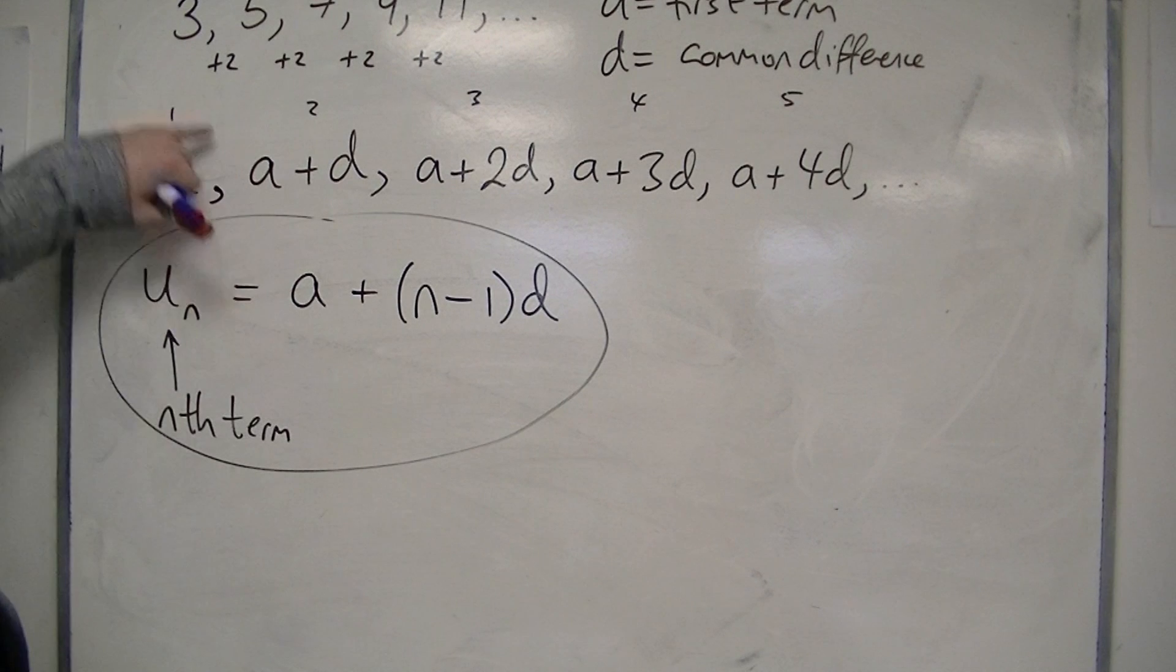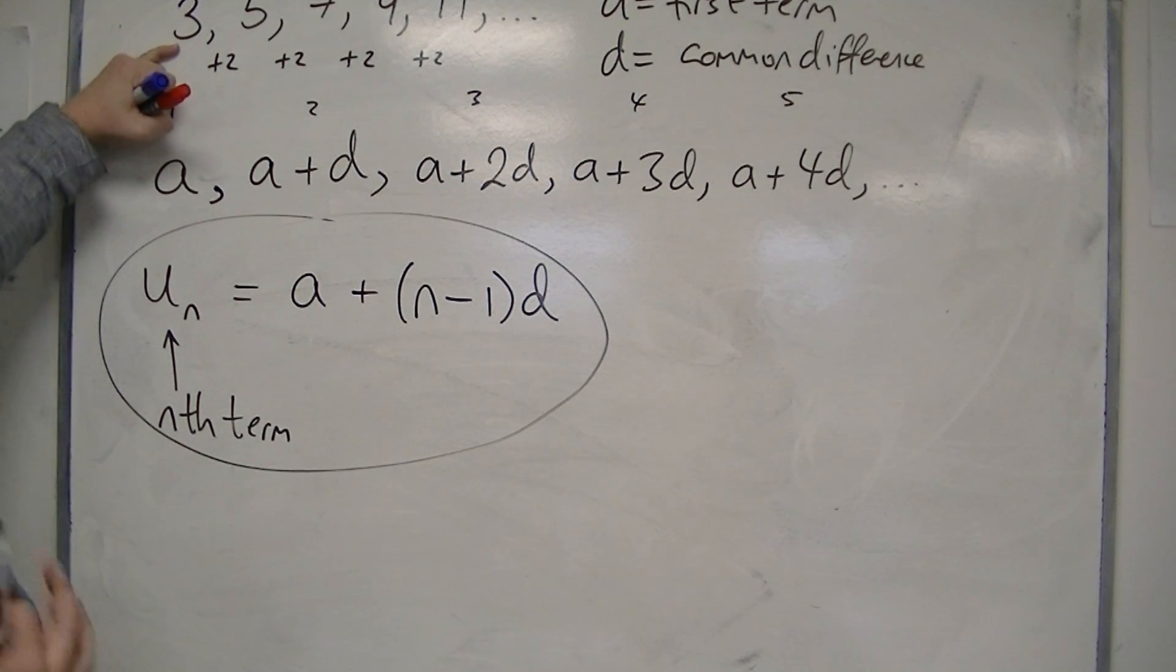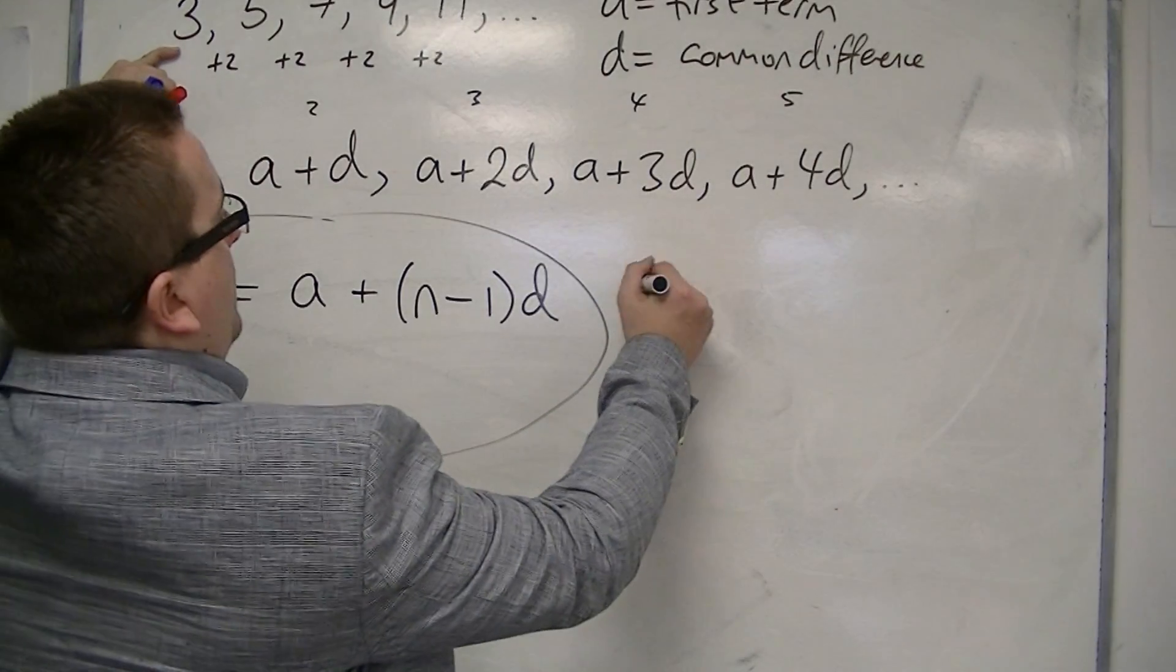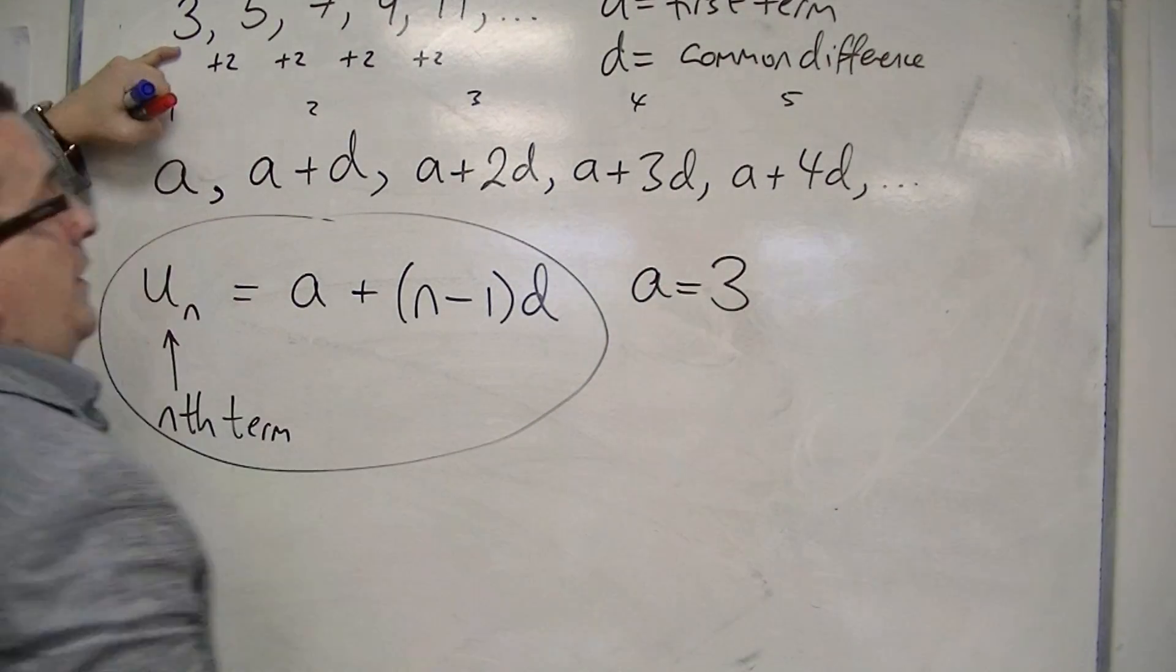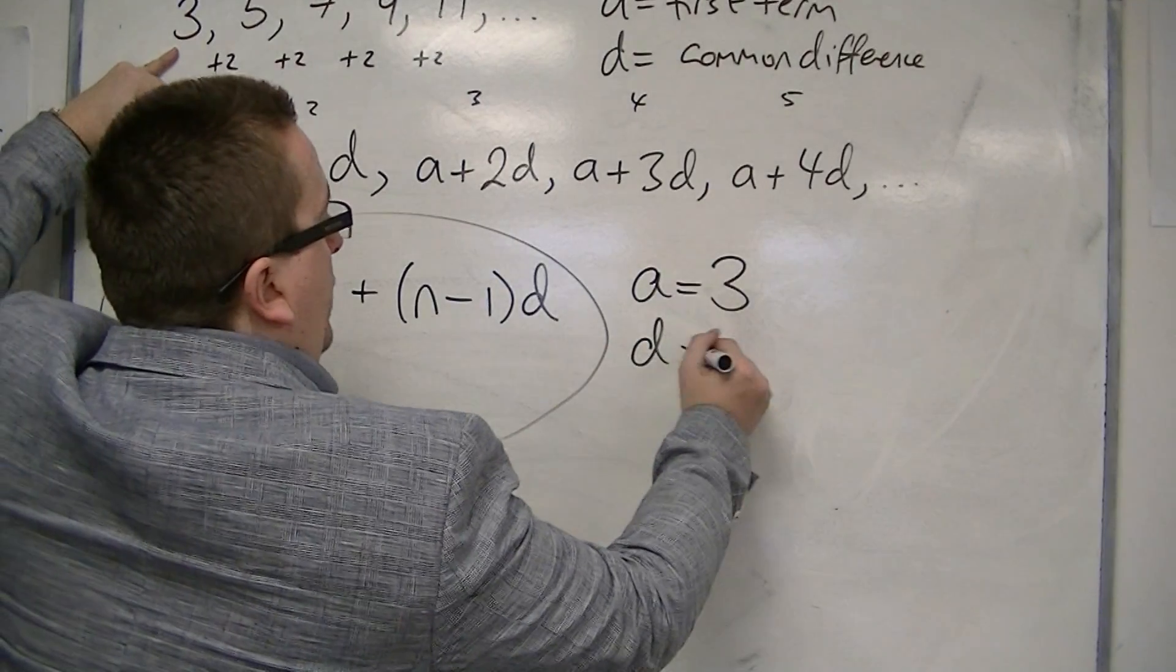So if I wanted to look back at this sequence and think, right, well, what is the nth term of that sequence? If I identify that A is 3, the first term is 3, and the common difference is 2,